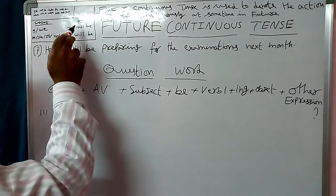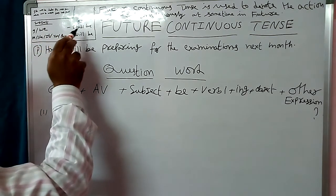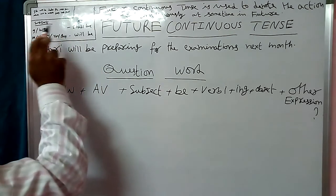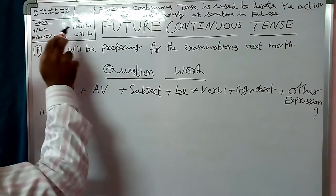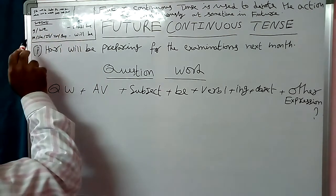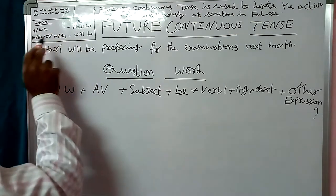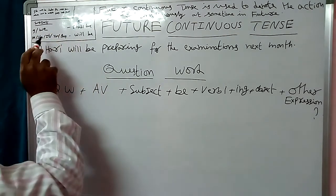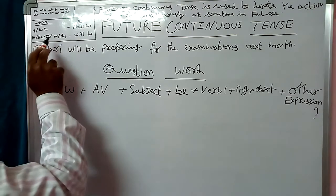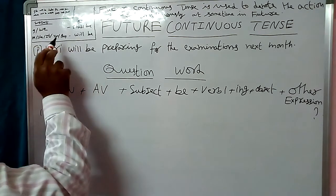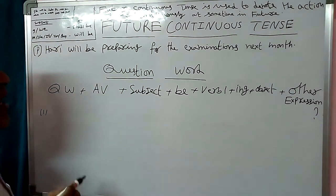The Subject indicates I, We, He, She, It, You, They. The Auxiliary indicates: I/We Shall Be; He/She/It/You/They Will Be.